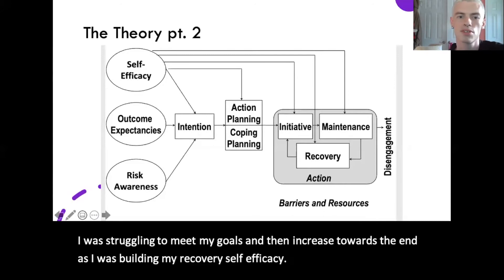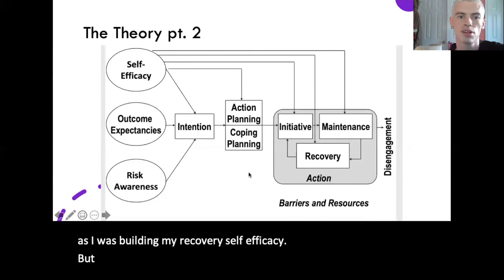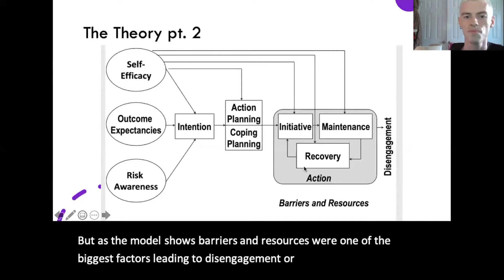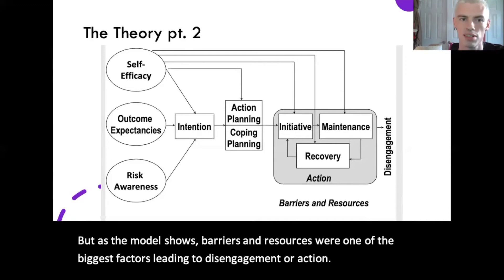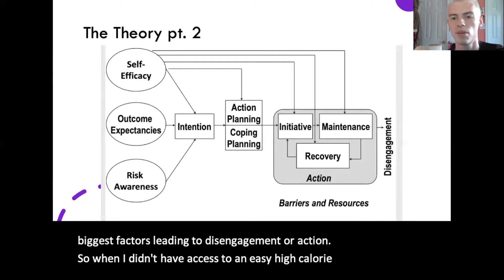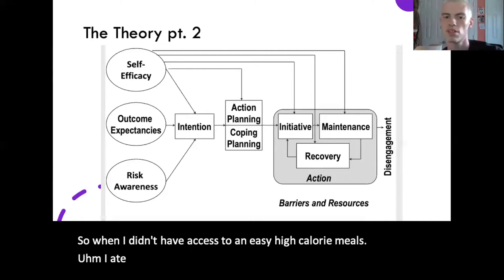As the model shows, barriers and resources were one of the biggest factors leading to disengagement or action. When I didn't have access to easy high-calorie meals, I ate fewer calories and was less concerned about my goals.